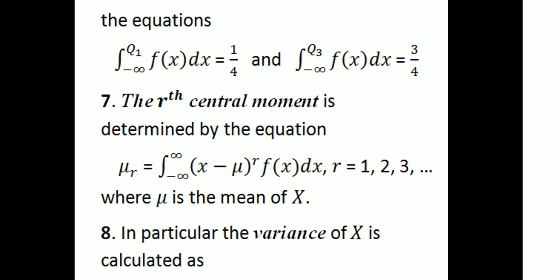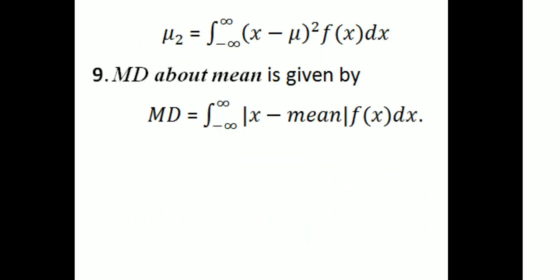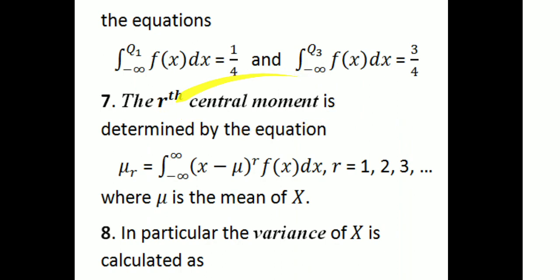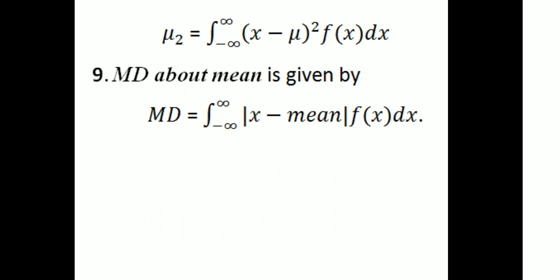The central moment is: μ_r = integral from minus infinity to infinity of (x − μ)^r · f(x) dx. In particular, the variance of x is calculated as: μ_2 = integral from minus infinity to infinity of (x − μ)^2 · f(x) dx, which corresponds to r = 2. The mean deviation about the mean is given by: MD = integral from minus infinity to infinity of |x − μ| · f(x) dx.